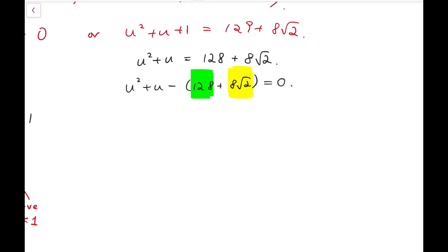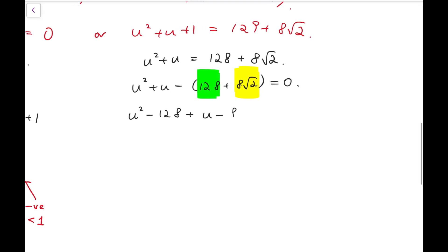Now, to make it simpler, I'm going to factorize. I'm going to regroup terms first, and then factorize. So the first part, u squared minus 128, I'm going to rewrite that as u minus 8 root 2 times u plus 8 root 2, simply because 128 is the square of 8 root 2 plus u minus 8 root 2 equal to 0.